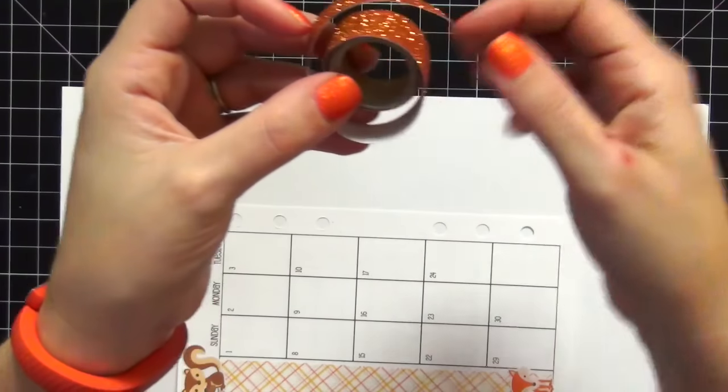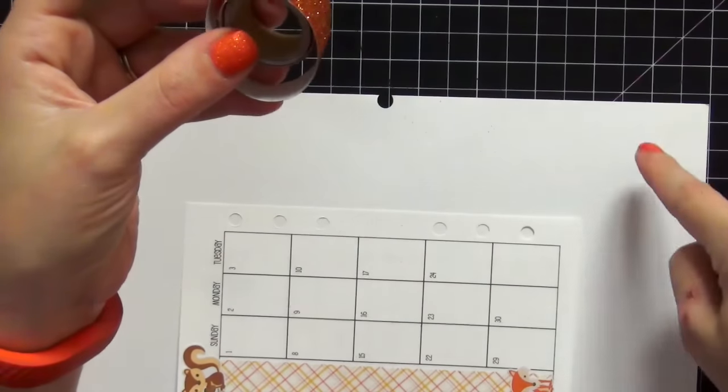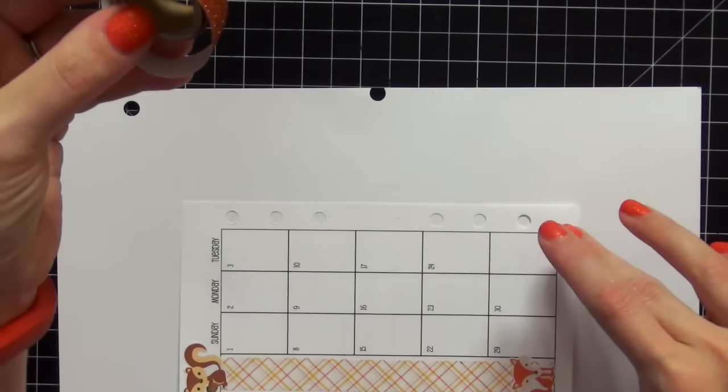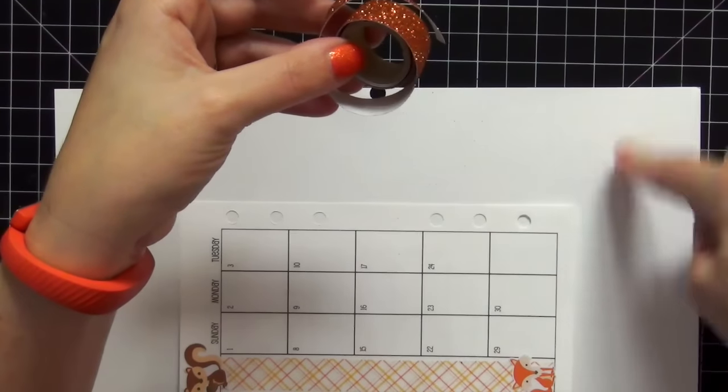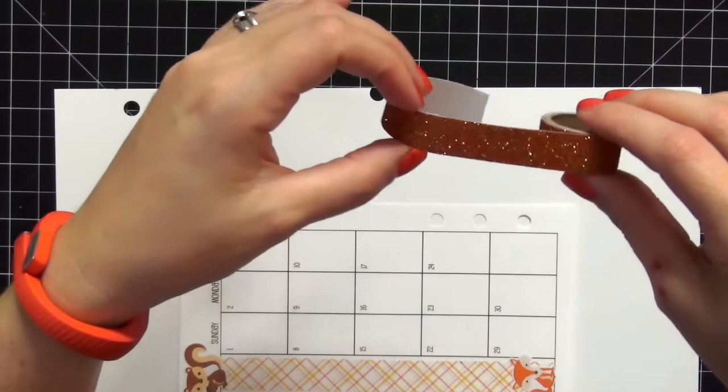The reason why I'm laying this directly on my insert is because I have tried it directly on a piece of scratch paper, and when I tried to lift it up, it ripped the tape and it was not good. So it's best to do it directly on your insert.